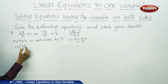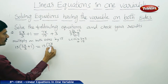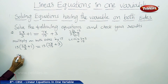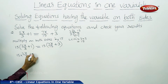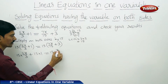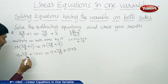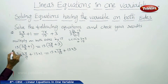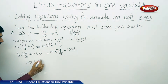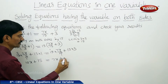So 15 of 2x by 3 plus 1 equals to 15 of 7x by 15 plus 3. Distributing: 15 into 2x by 3 plus 15 into 1 equals 15 into 7x by 15 plus 15 into 3. Cancelling the 3s and 15s: 5 into 2x gives 10x plus 15 equals 1 into 7x, so 7x plus 45.